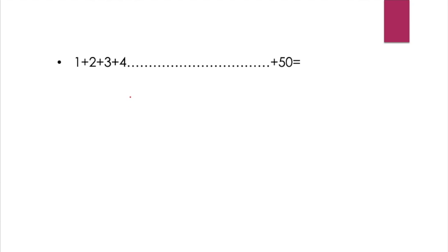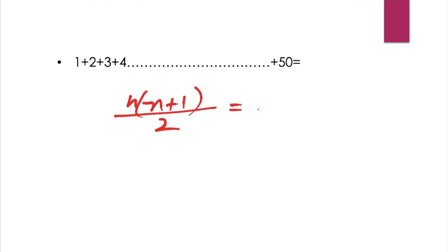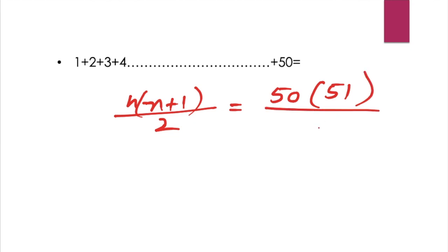So we are going to use n into n plus 1 by 2. So, 50 plus 1 is equal to 51. So n plus 1 is 51, divided by 2.